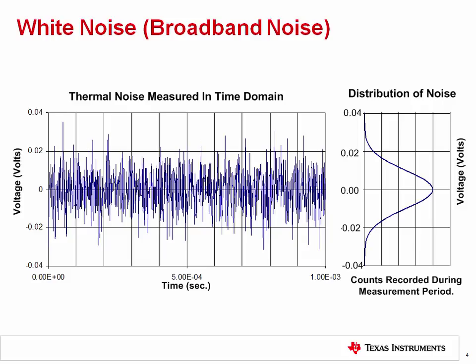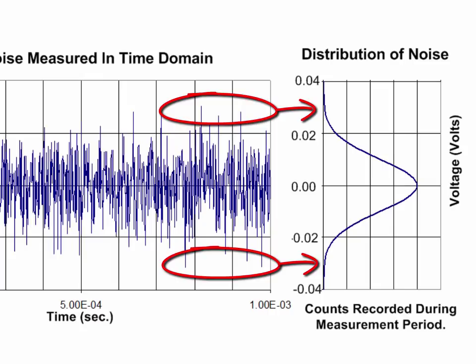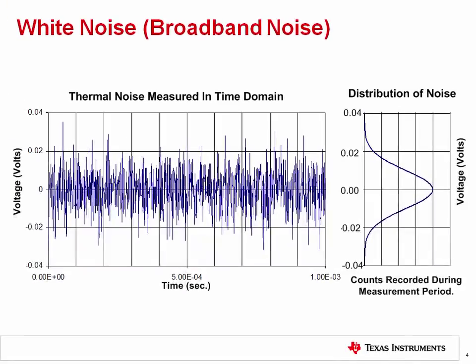In the next slide, we'll consider lower frequency noise sources. Also note the statistical distribution to the right hand of the slide. The distribution is Gaussian with a mean value of 0 volts and the skirts of the distribution at approximately plus or minus 40 millivolts. The distribution indicates that the probability of measuring noise near 0 volts is high, whereas the probability of measuring noise near the skirts of the distribution is relatively low. Later we will see how the distribution can be used to estimate the peak-to-peak value of the noise signal.